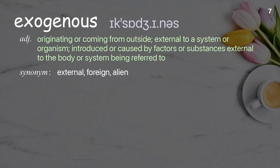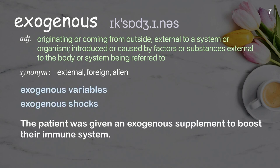Exogenous: Originating or coming from outside; external to a system or organism; introduced or caused by factors or substances external to the body or system being referred to. Examples: exogenous variables, exogenous shocks. The patient was given an exogenous supplement to boost their immune system.